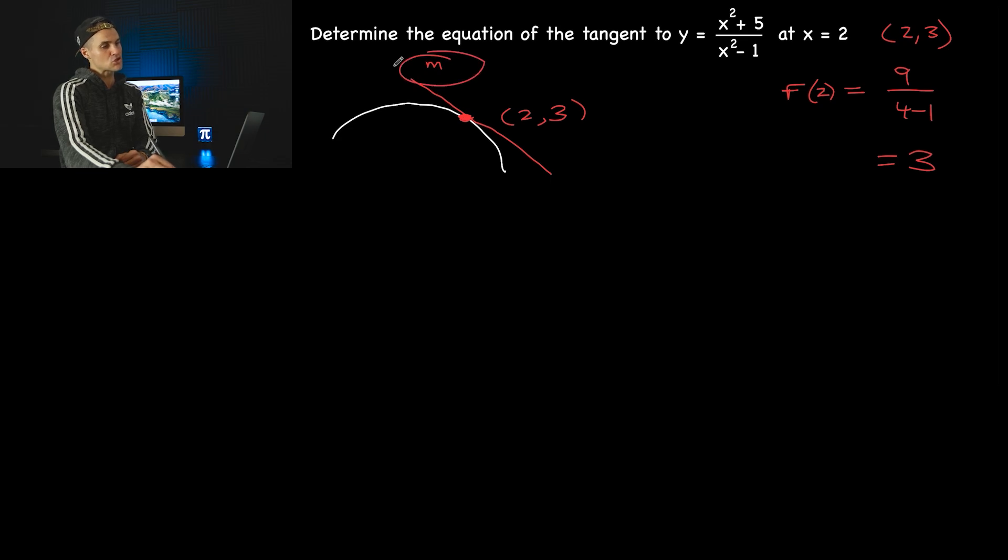Now we have to find the slope of this tangent. And how do we do that? We're going to have to find the derivative of this function and then plug in that x value of 2, and that will give us the slope of the tangent at that specific x value. So to find the derivative here, let's do the quotient rule. This is a rational function, and it has both variables in the numerator and denominator.